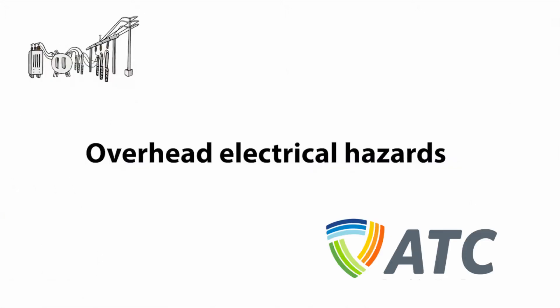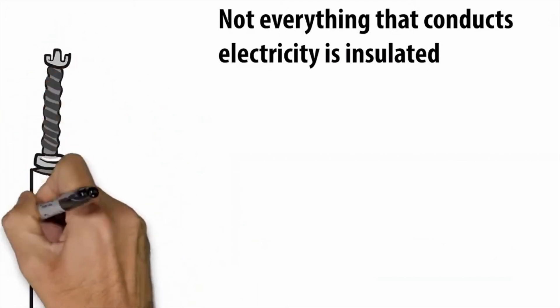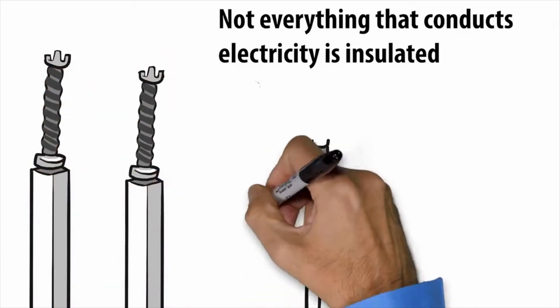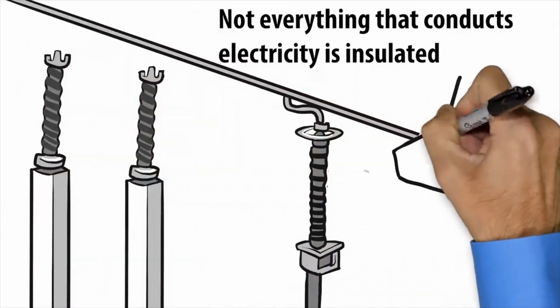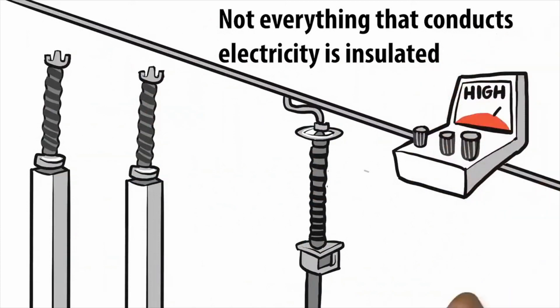Overhead electrical hazards. Not everything that conducts electricity is insulated. Overhead, substations use a metal pipe, resembling conduit, or angled aluminum called a bus to conduct high-voltage electricity. These are open-air conductors because they are not insulated.